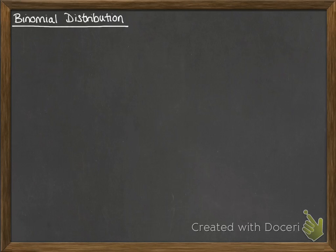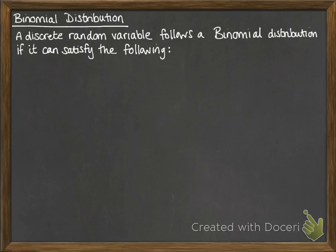Right, onwards with binomial distribution. Now this is leading on from discrete random variables that we've been doing recently. Discrete meaning they take particular values, it's not continuous. A discrete random variable follows a binomial distribution if it can satisfy the following. So it's a particular kind of distribution within the discrete random variables.